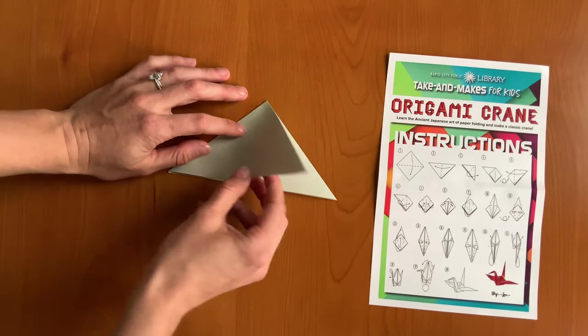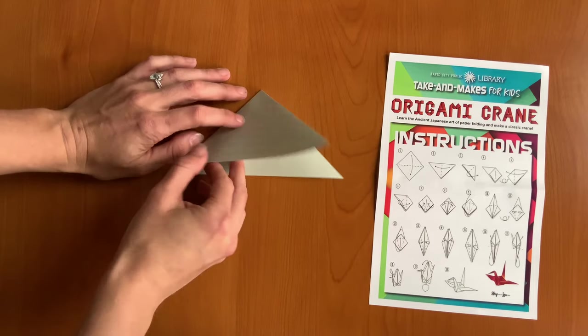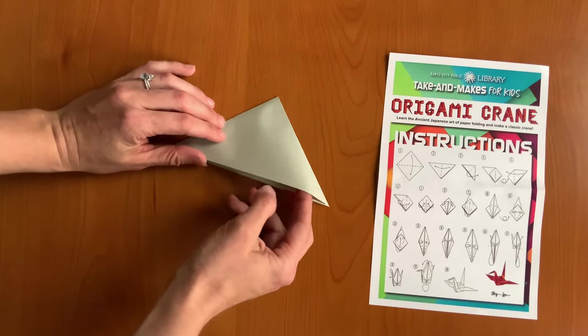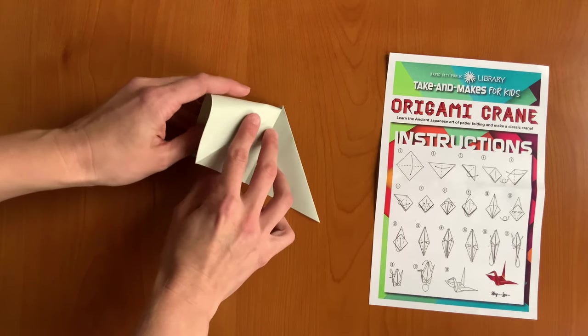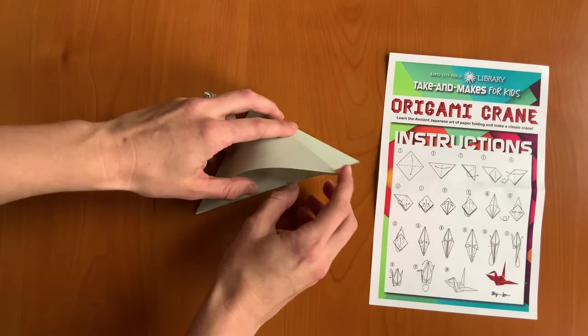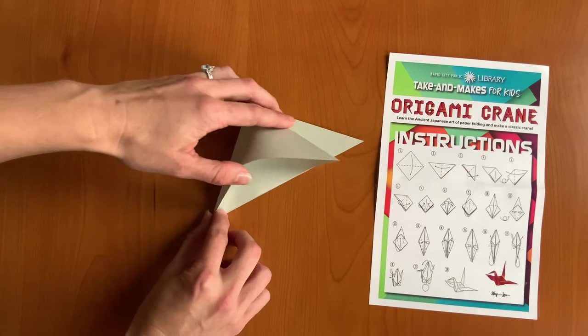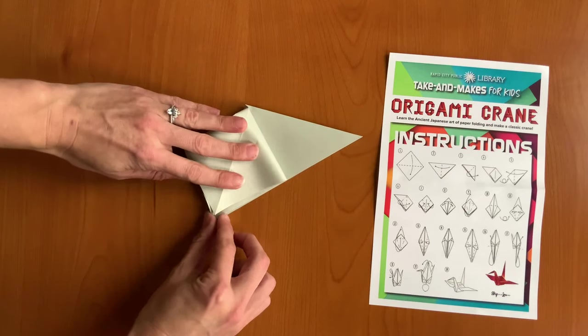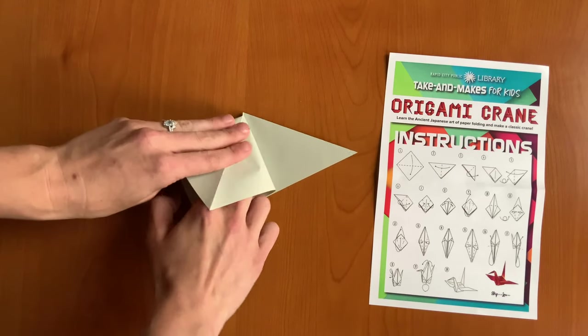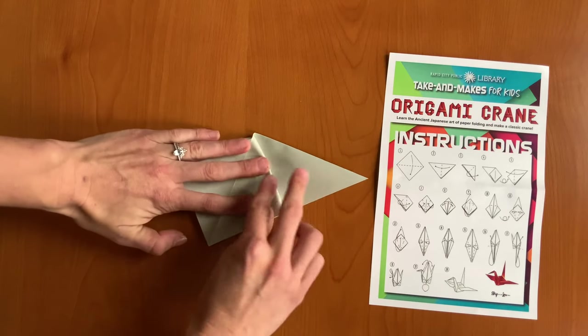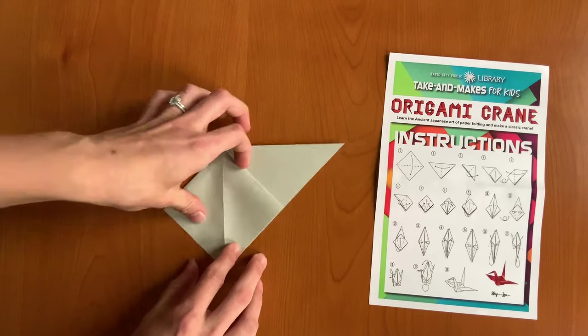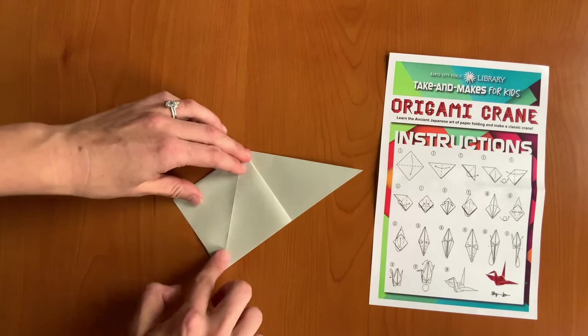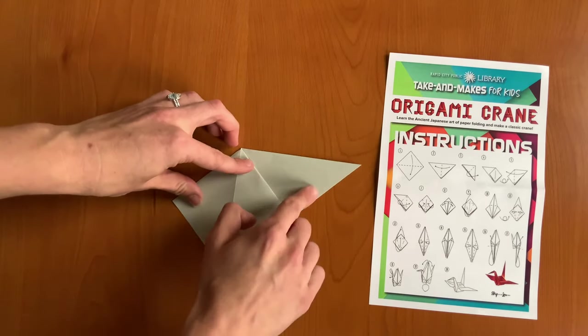Alright. Now this next part's a little tricky. We're going to take just the top layer of one of our folds. And you're going to slip your finger in between it. And we're going to do what's called a squash fold. So you want to bring this corner over to this one by squashing it down. Nice job. So now we have kind of a diamond shape with another arrow sticking out of it.